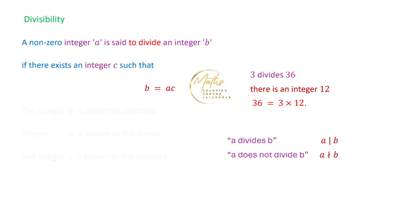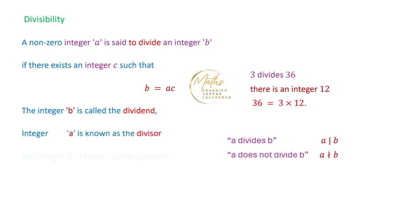From these three terms — B, A, and C — the integer B is called the dividend, the integer A is called the divisor, and the number C we have obtained is known as the quotient.